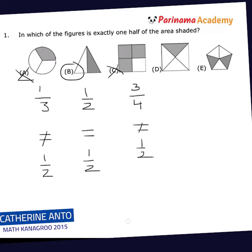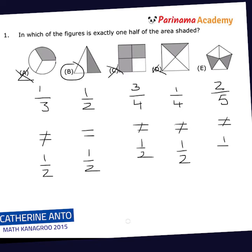For D, I see that the square is split up into four parts, and one of them is shaded, and one fourth is not equal to one half. So D cannot be the answer. For E, I see that the pentagon is split up into five parts, and two of them are shaded, and two fifths is not equal to one half. So E cannot be the answer.